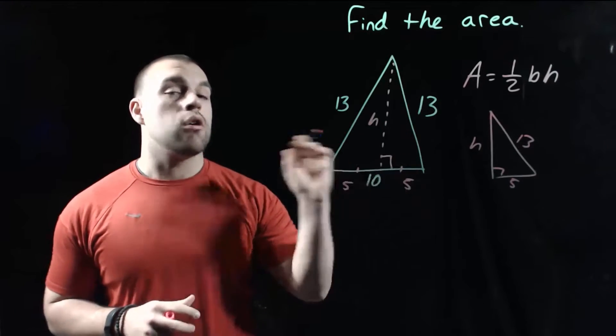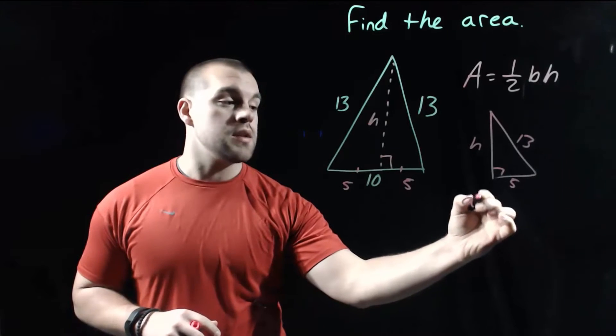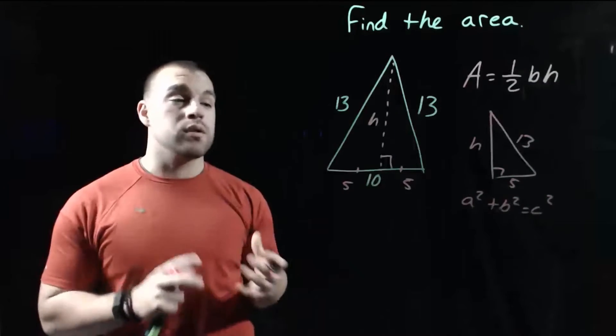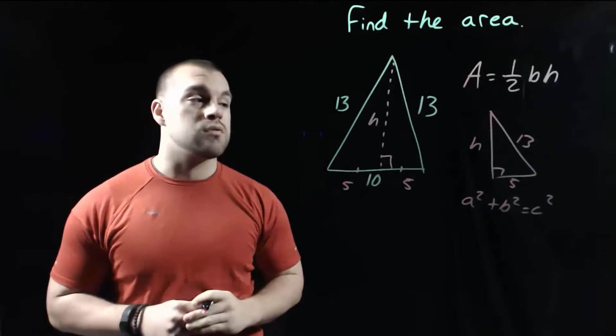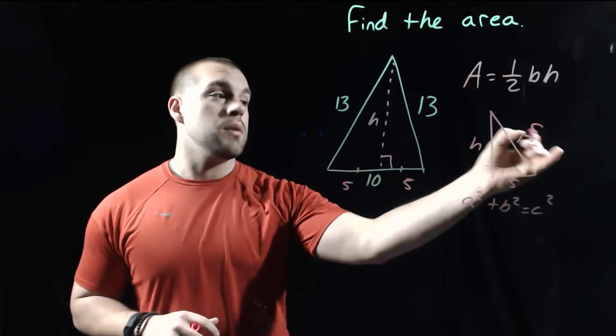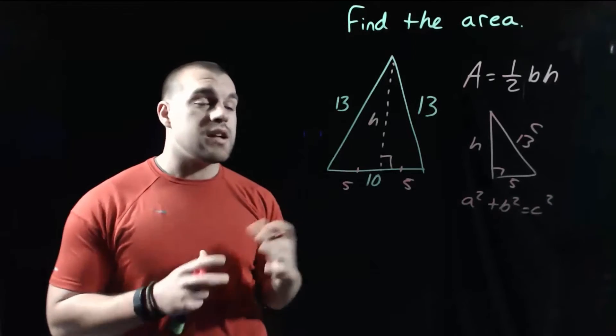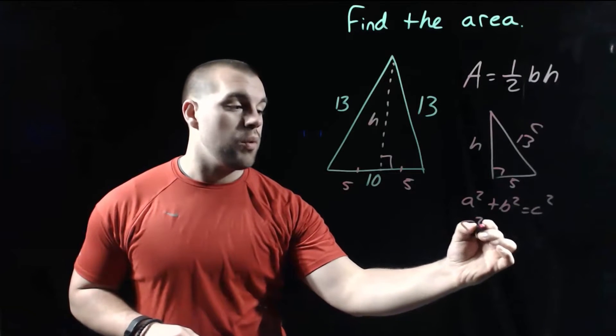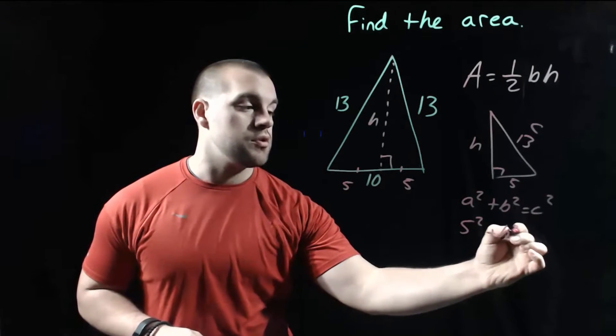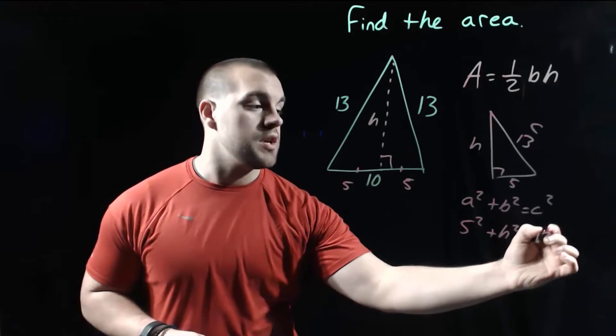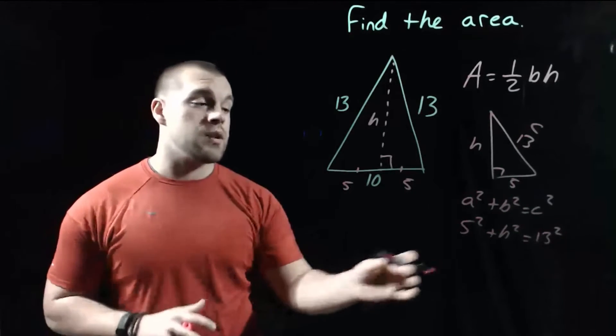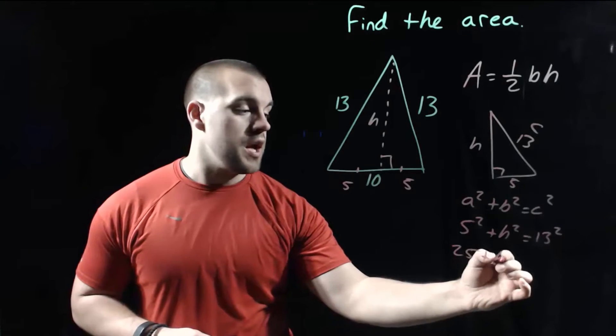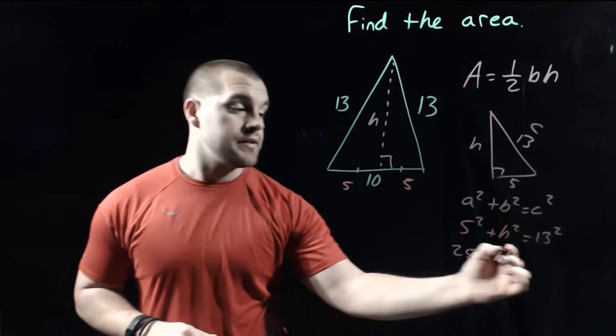So we're going to use our Pythagorean Theorem. Remember the Pythagorean Theorem is a squared plus b squared equals c squared and the most important side is that hypotenuse across from the right angle. So for us that's going to be the 13. That's going to be our c value. The other sides don't really matter, a or b. We can just plug them in anywhere we want. So I'm going to go 5 squared plus h squared equals 13 squared. Now if we square these numbers out, 5 squared is 25 plus h squared equals 13 squared is 169.